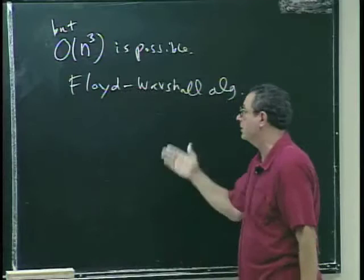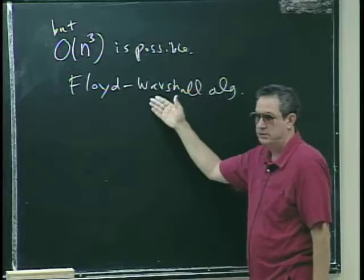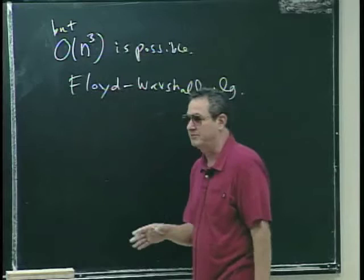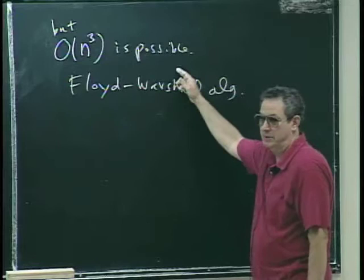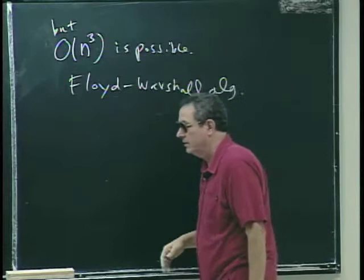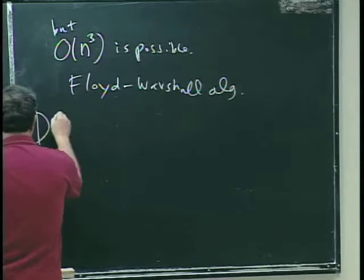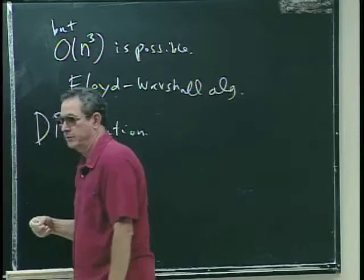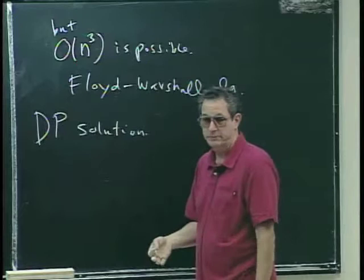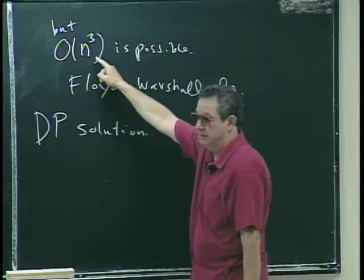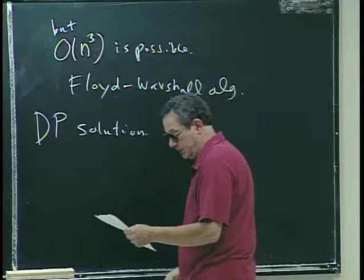Floyd-Warshall is not in the textbook, but there's a good explanation on Wikipedia. It's also dynamic programming — there's a recursive way of looking at the problem, and then a way of organizing that recursive computation bottom-up very efficiently: in n cubed time. Let me introduce the notation.